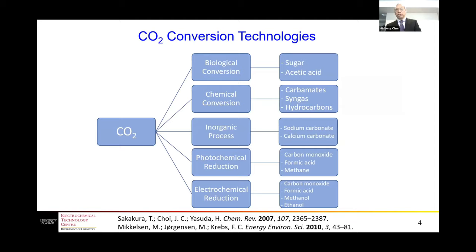There are a number of approaches or technologies that could convert carbon dioxide to value-added products. These could be through biological, chemical, or inorganic processes, and could also benefit from photochemical reduction and electrochemical reduction.